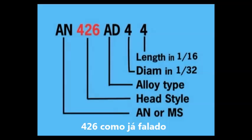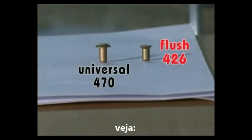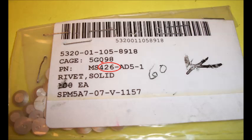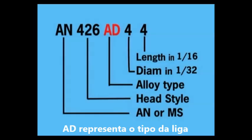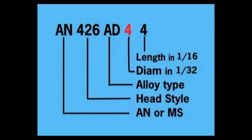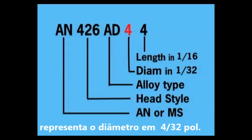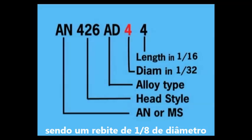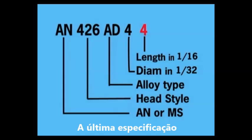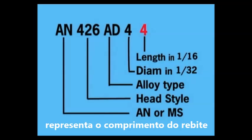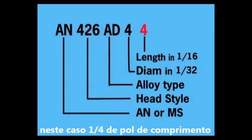The 426 specifies that we need a flush style head on the rivet. The AD is a code that specifies the type of alloy the rivet is made of, and AD rivets are specified to be used in your RV plans. The next number specifies the diameter of the rivet in 32nds of an inch — in this case 4/32nds, or 1/8 inch diameter. The last number specifies the length of the rivet in 16ths of an inch — in this example 4/16ths, or 1/4 inch.